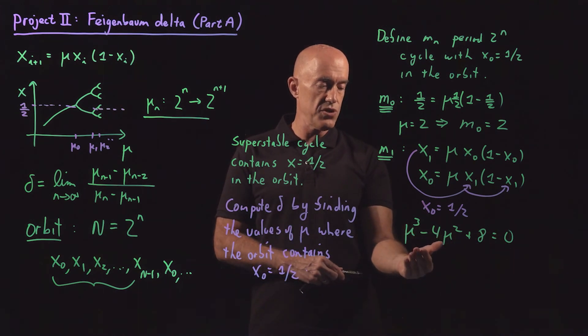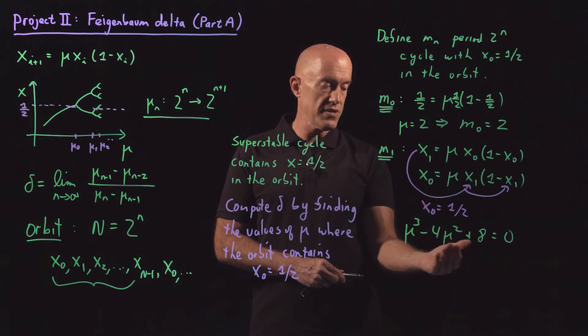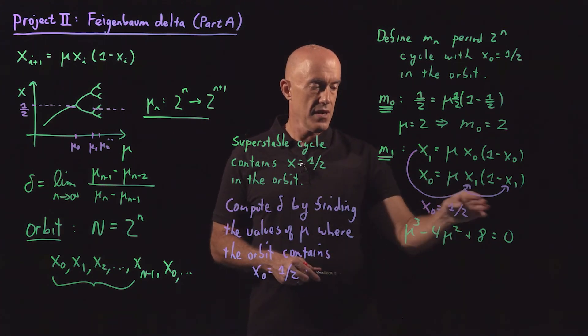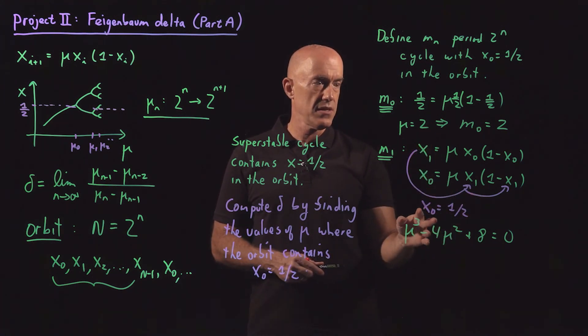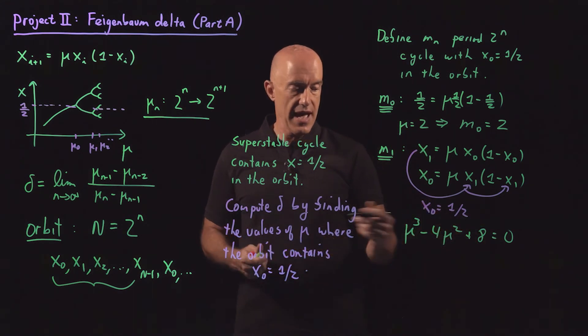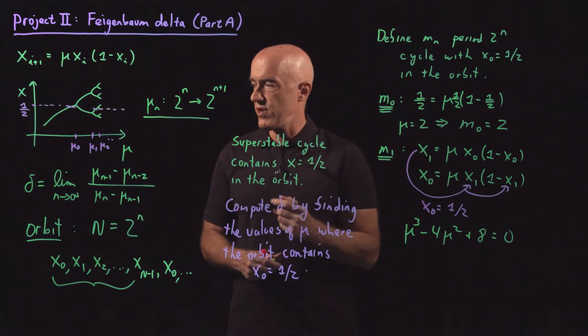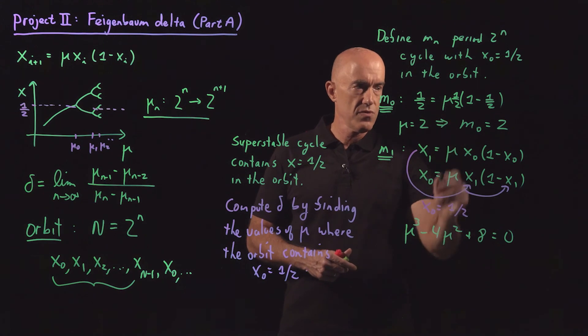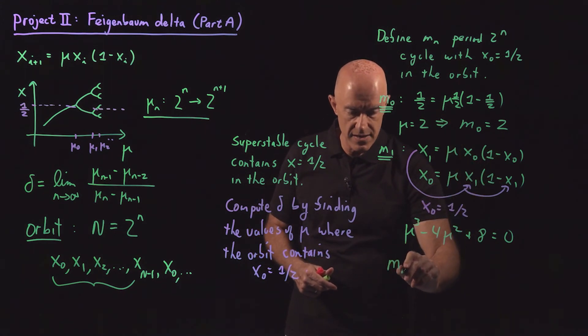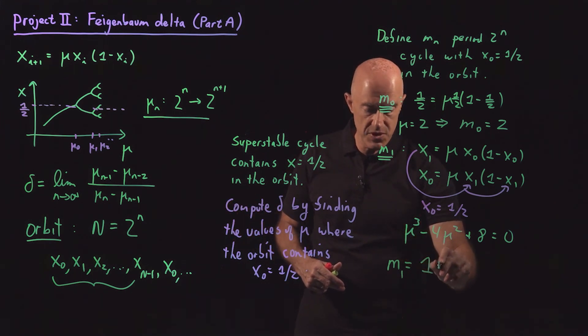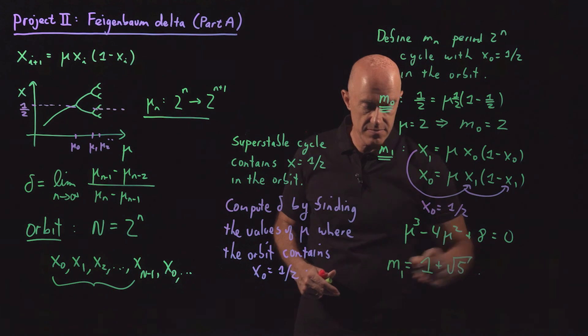So if we plug in mu equal to two, we have 2 cubed, which is 8 minus 4 times 4, minus 16 plus 8. And that definitely gives us zero. So we can factor out the mu equal to two root here doing polynomial division. And you're going to do that as a reading problem. And then what you find is the solution for mu, which will give us m1. You will compute that m1 equals 1 plus square root of 5.